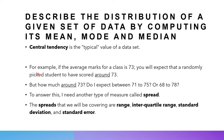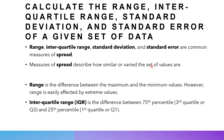But how much around 73? Do I expect everyone to score between 71 to 75, or 68 to 78? To answer this, I need another measure called spread — how wide the values can be. There are four measures of spread we're covering: range, interquartile range, which you covered in secondary school, and standard deviation and standard error, which are probably new at this point. These are just measures of how wide or how similar the values are.